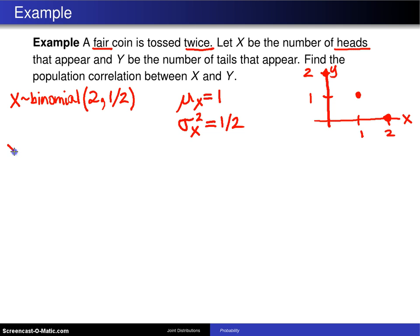Likewise the random variable Y, which is the number of tails that appear, will also have a marginal binomial distribution and that is with parameter 2 because of the two trials and the probability of 1 half because it's a fair coin. This means that mu sub Y will be N times P which is 1, and sigma sub Y squared is N times P times 1 minus P and that gives you 1 half.